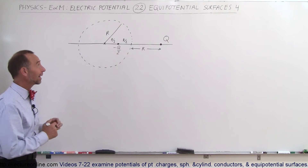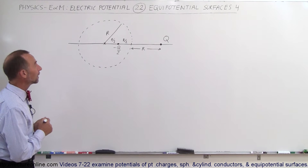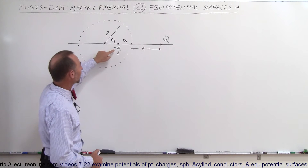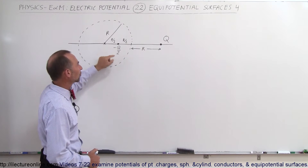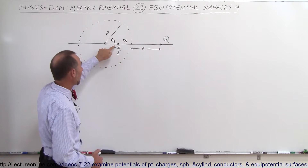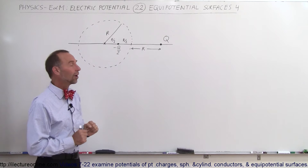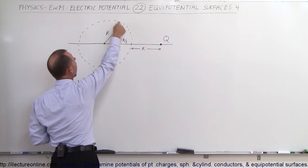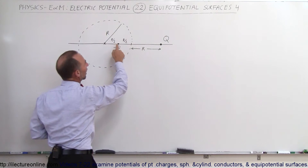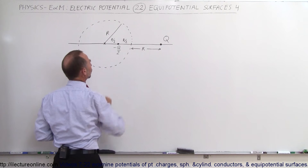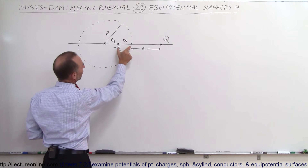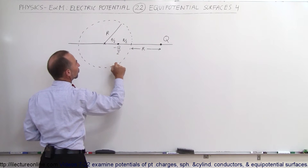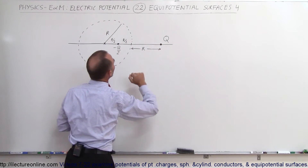Welcome to Electron Online. Let's try this example. We have two charges: one positively charged +Q and another negatively charged -Q/2. The magnitude of the first charge is twice that of the second, and they are opposite in sign. We draw a circle with its center between them, radius R, passing through the line between Q and -Q/2. The circle passes a point that is R/2 away from -Q/2 and a full R away from Q.